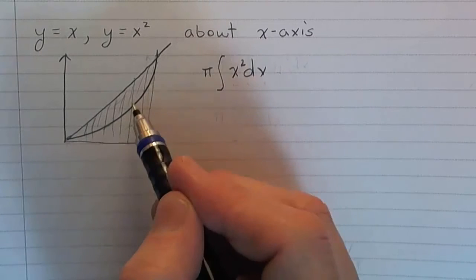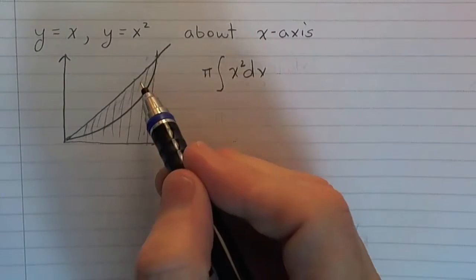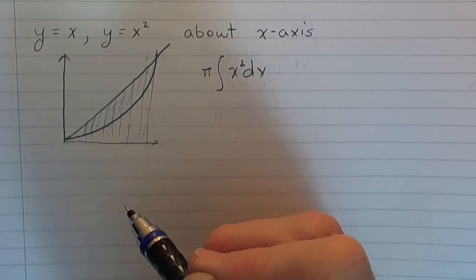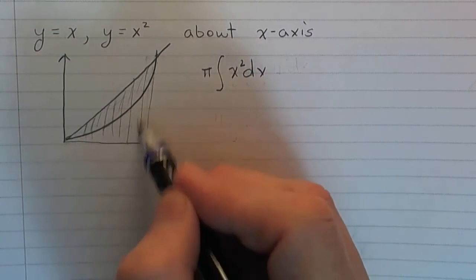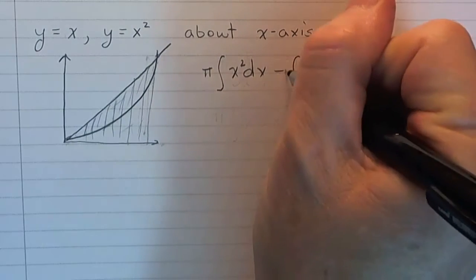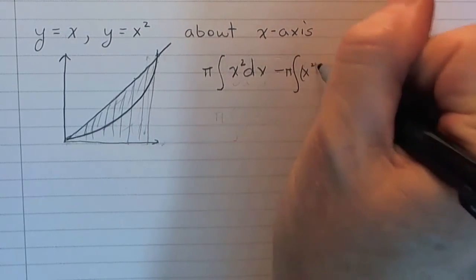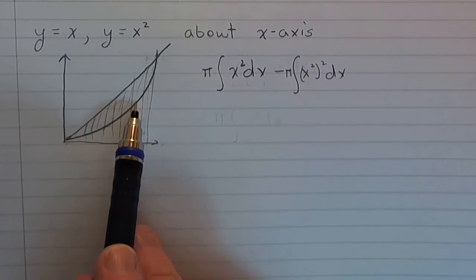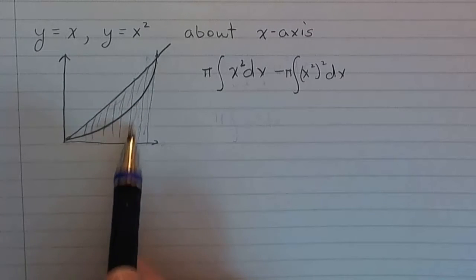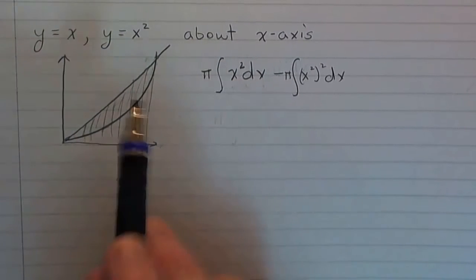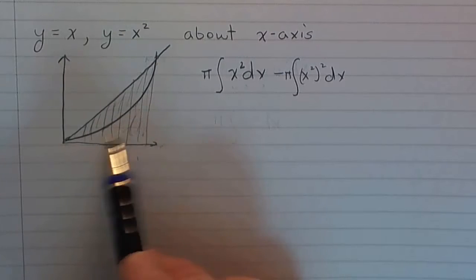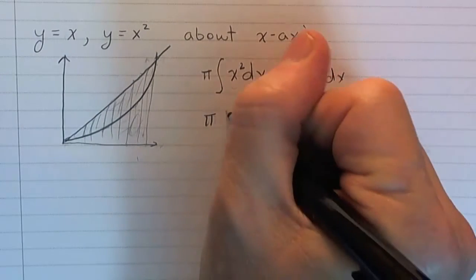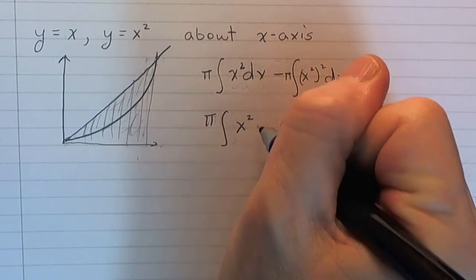We'd get a cone, but we don't want the volume of that cone — we only want the volume of this little wedge revolved around the x-axis. So we don't want this extra part, and what I want to do is subtract that off: pi times x squared squared. In other words, I want to subtract off the volume of the solid when I revolve x squared about the axis.